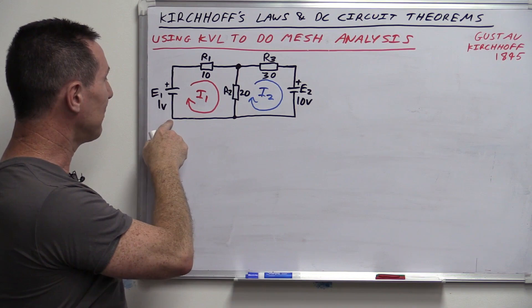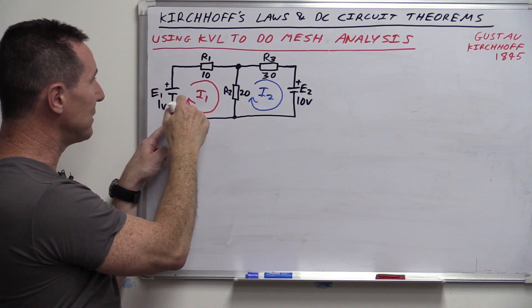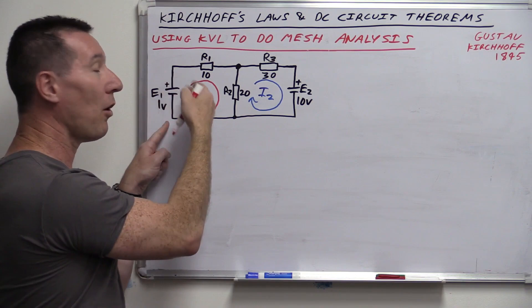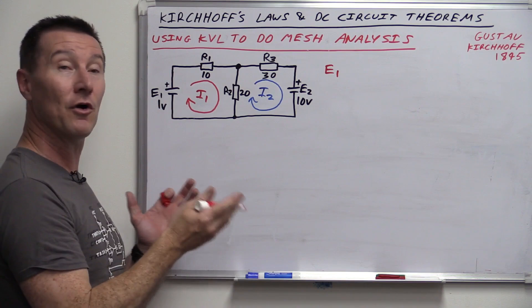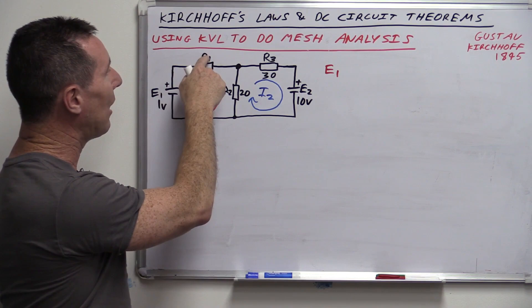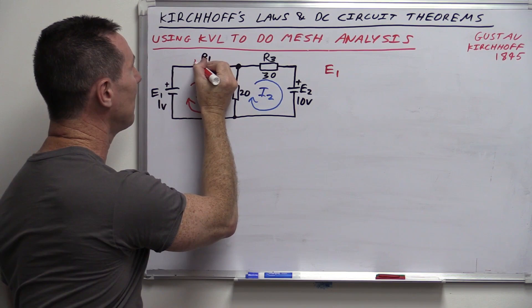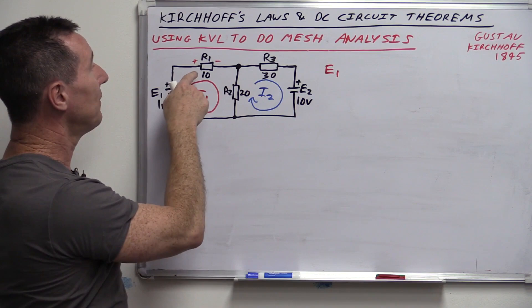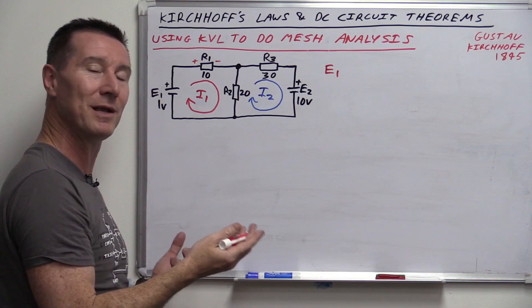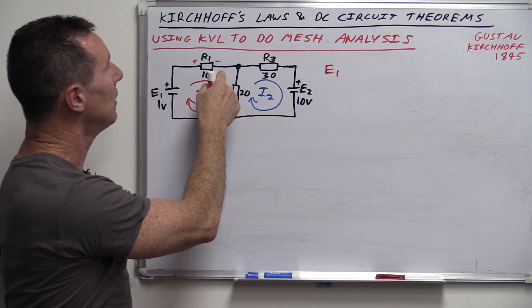The superposition theorem only applies if you've got more than one source, and the sources must be linear. So let's solve for E1 first — replace E2 with a short circuit. We need to derive the total current IT from E1. Using Ohm's law: IT = E1 / (R1 + R2 ∥ R3), where R2 ∥ R3 means R2 in parallel with R3, calculated as R2·R3 / (R2 + R3). Plugging in numbers: E1 = 1V, R1 = 10, R2 = 20, R3 = 30. The answer is IT = 0.04545 repeating amps.